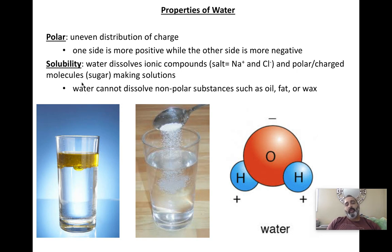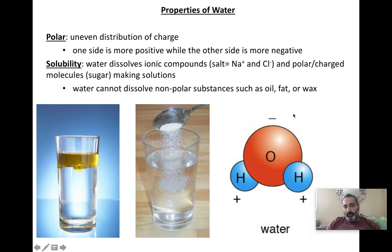One of the major properties of water is that it's polar, or has polarity. But what does polar mean? The definition says an uneven distribution of charge. Really what that means is a side of water exhibits a negative charge and some sides of the water exhibit a positive charge. Based on this picture, the hydrogens have to do with the positive and the oxygen side has to do with the negative.